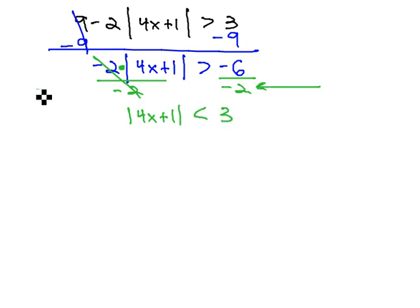Notice, because we divided by a negative, we had to flip the direction of the inequality symbol. Now that the absolute value is completely alone, we're ready to address it.